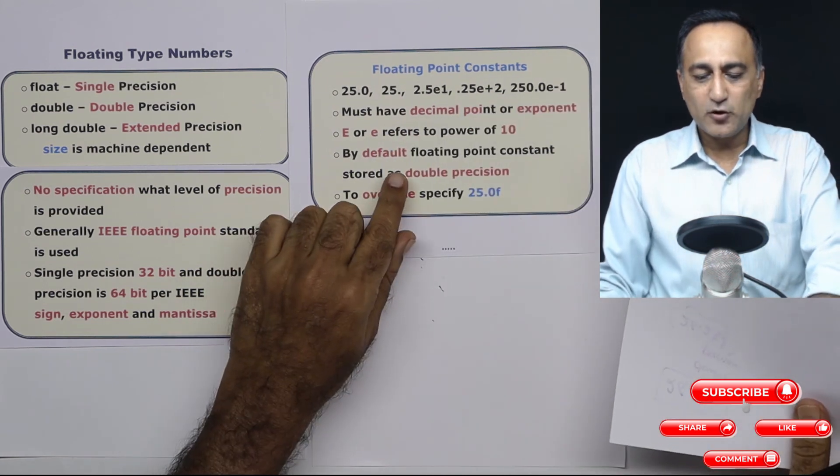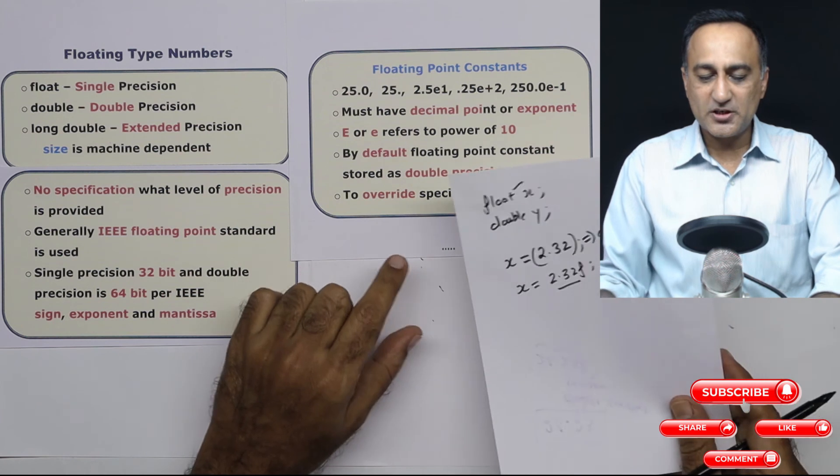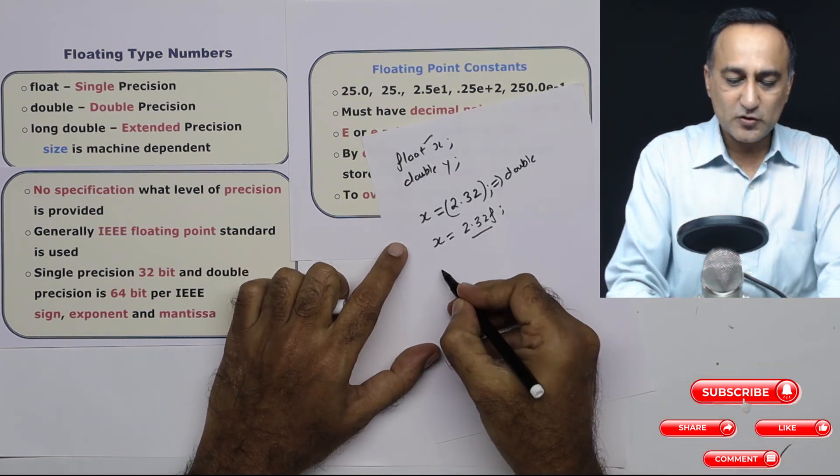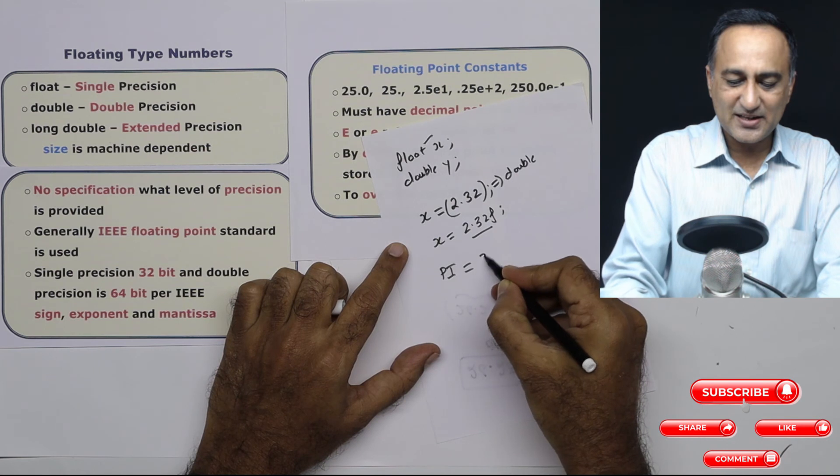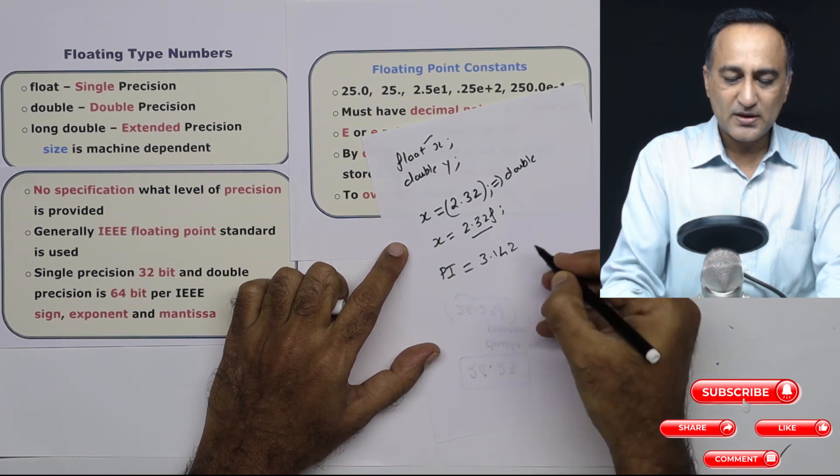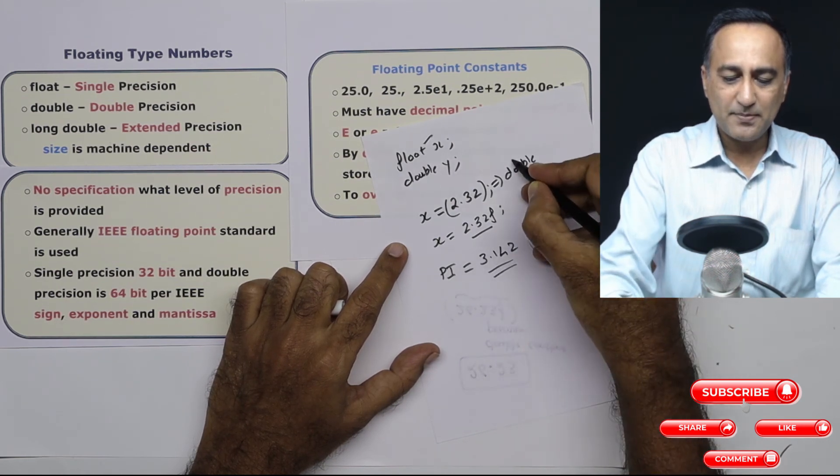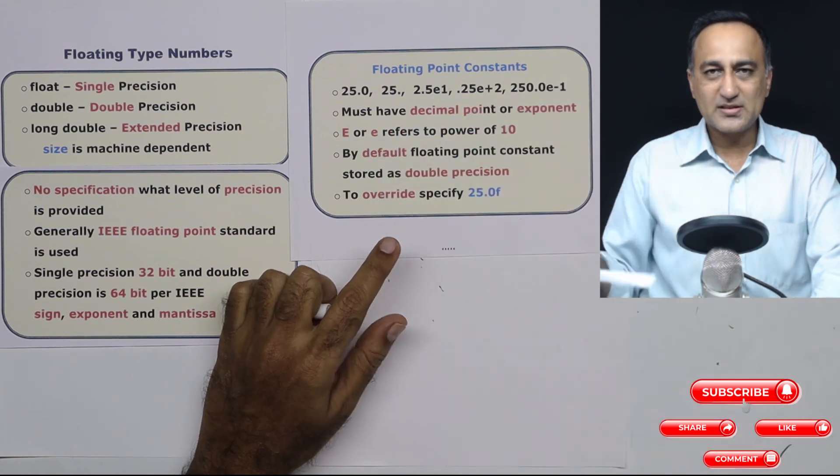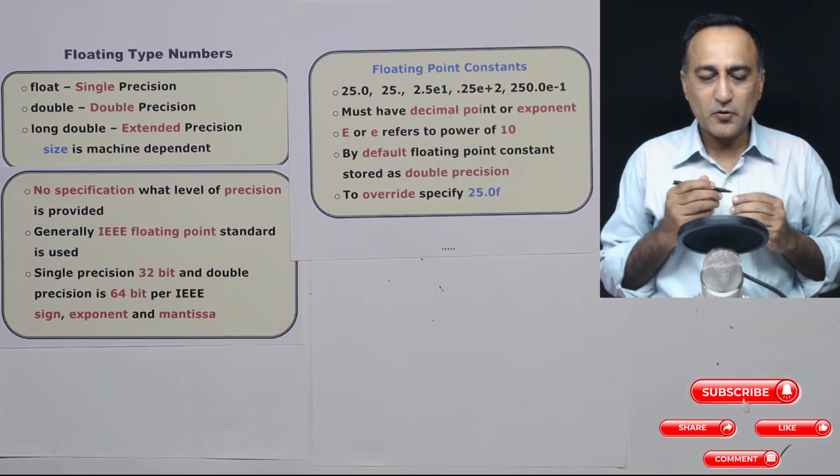So by default, if you declare a floating point constant, that is stored as double precision. So if you say something like this, pi is assigned the value 3.142, this is going to be of the variable type double. So you need to exercise caution when you are using floating point constants,